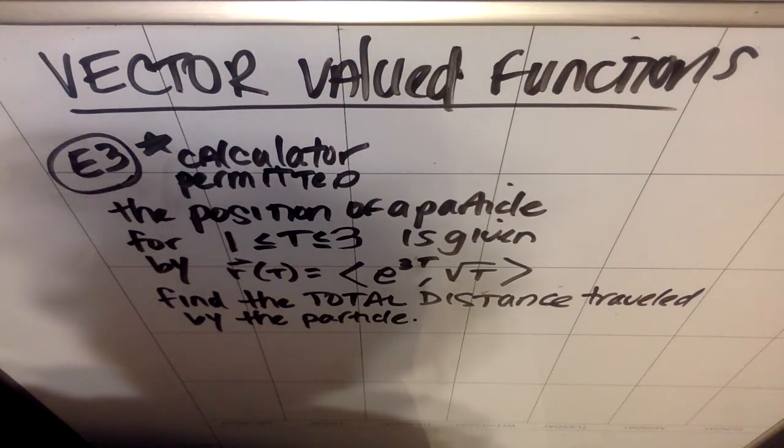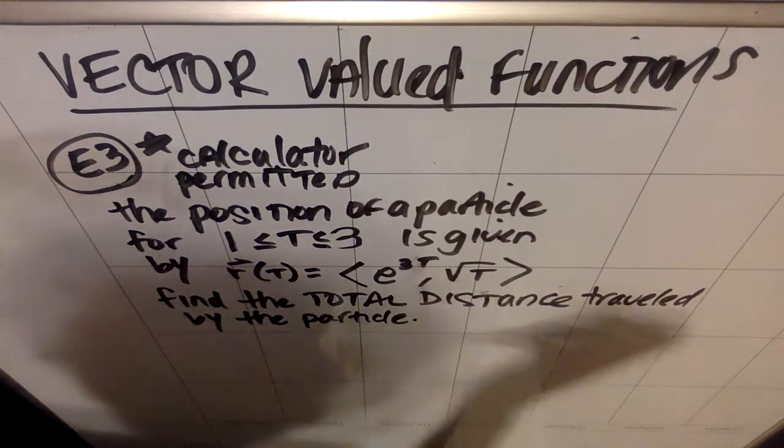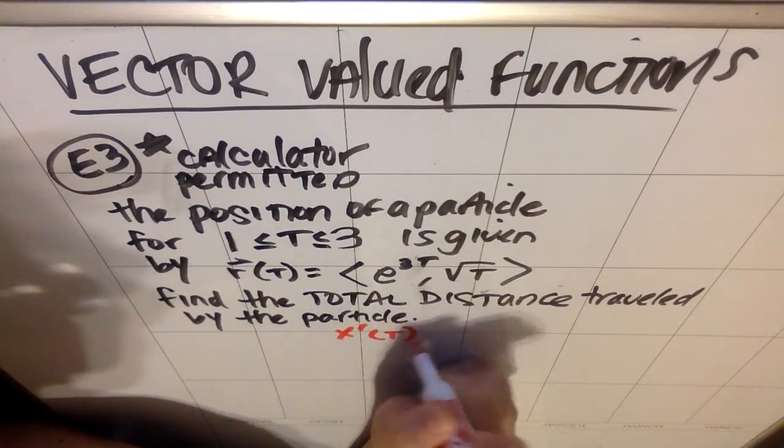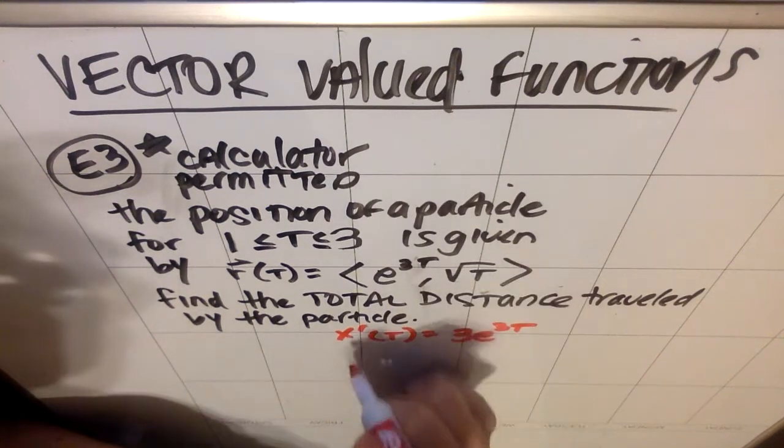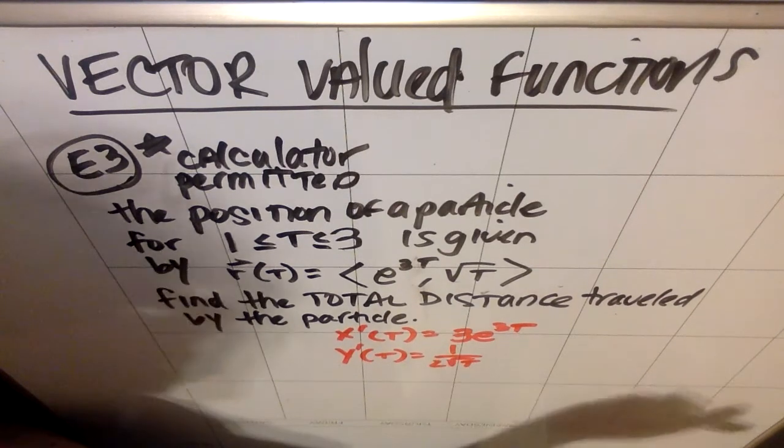So the part you have to do by hand is you need to find x prime of t and y prime of t. So remember, this is my x of t. So my x prime of t should be 3e to the 3t, and my y prime of t should be 1 over 2 root t.